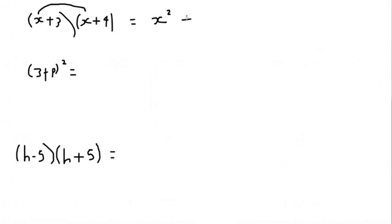Then you do outer, which is the two outer ones, so x times 4 which is 4x. Then you have to do inner, 3 times x, so plus 3x. Then you have to do last, which is 3 times 4, which equals 12.